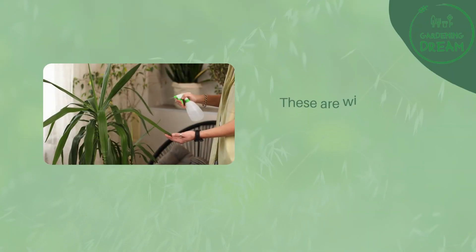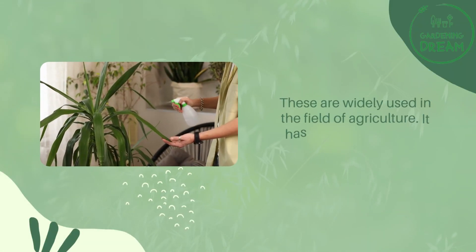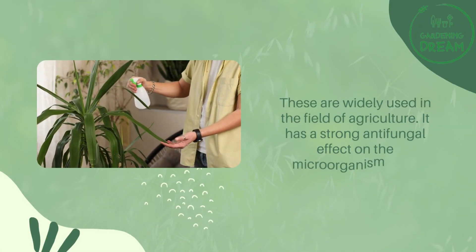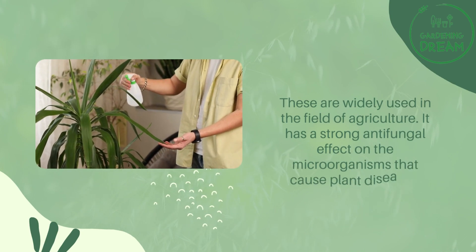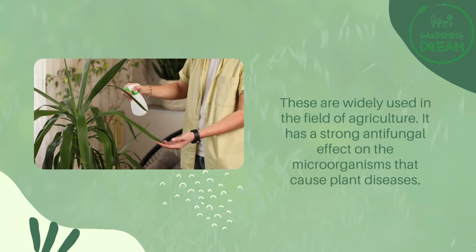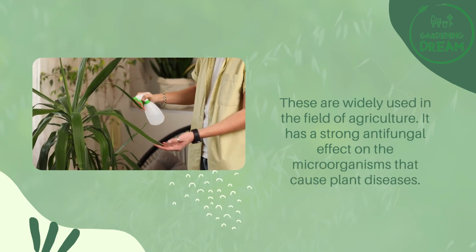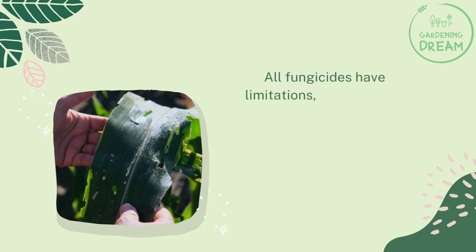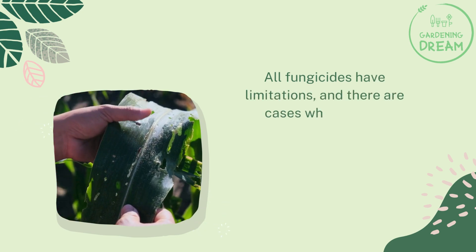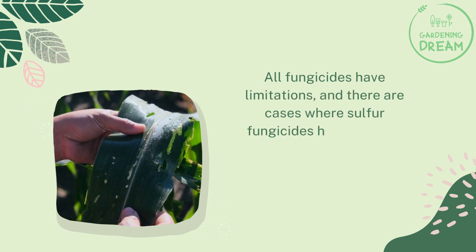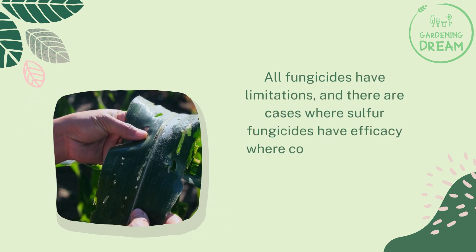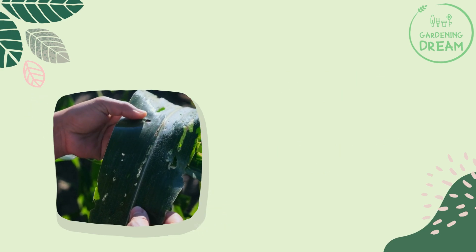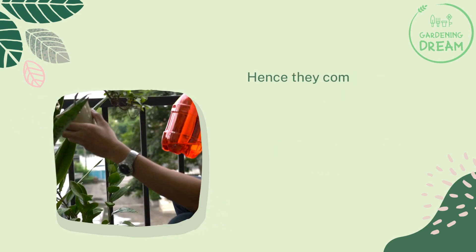Sulfur fungicides are widely used in the field of agriculture. They have a strong anti-fungal effect on the microorganisms that cause plant diseases. All fungicides have limitations, and there are cases where sulfur fungicides have efficacy where copper fungicides lack, so they complement each other.